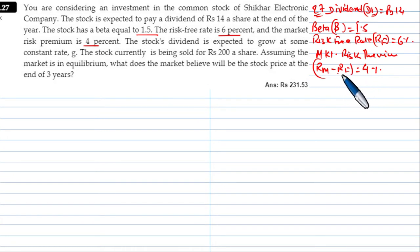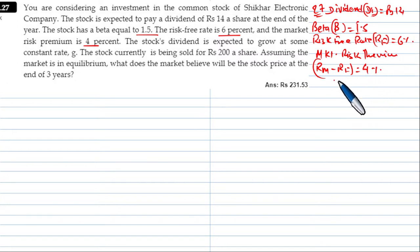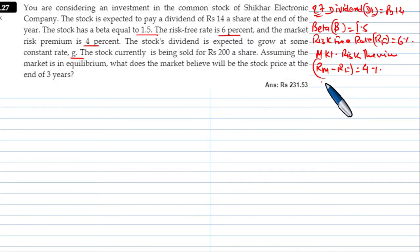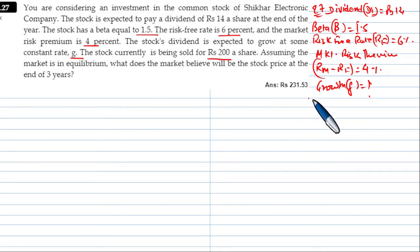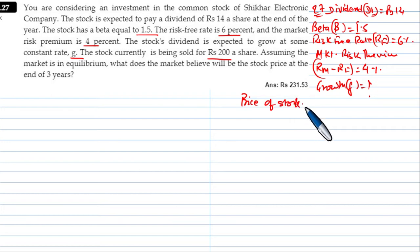The market return is 10%, so 10 minus 6 is 4% market risk premium. The stock is currently being sold for Rs. 200 a share, so P0 is equal to Rs. 200.